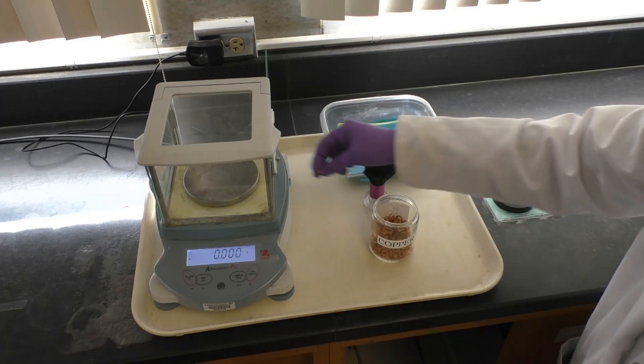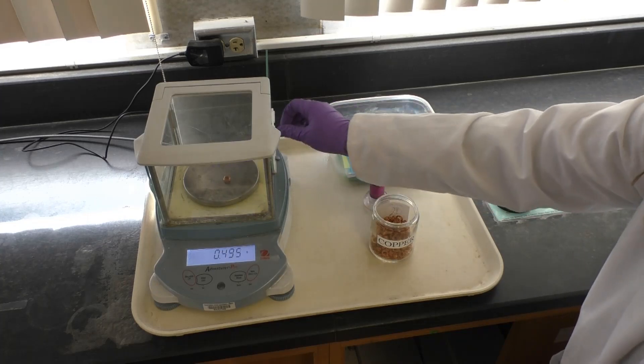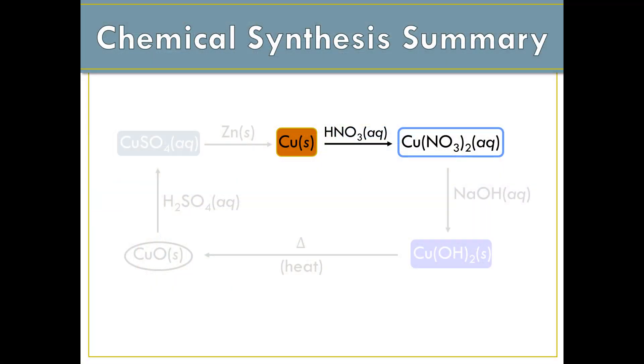Begin your synthesis by weighing out a piece of copper coil to three decimals. The first reaction of our synthesis is to form copper-2-nitrate by reacting your copper sample with nitric acid.